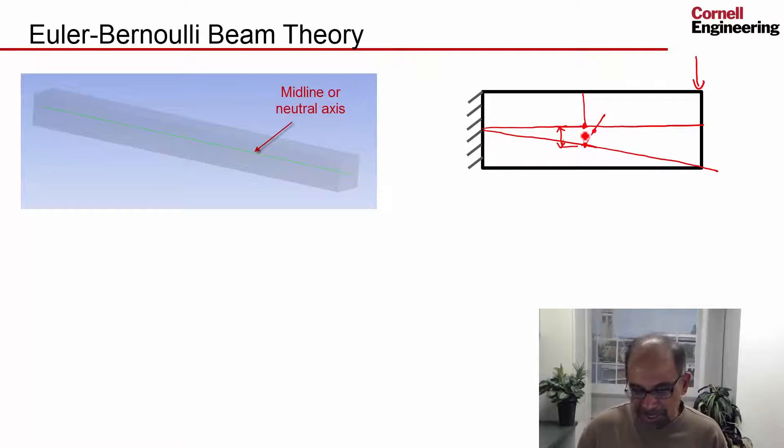And you find this displacement and rotation by minimizing the potential energy. I don't want to go into details in the interest of time, but if you're not familiar with Euler-Bernoulli beam theory, you might want to look it up.